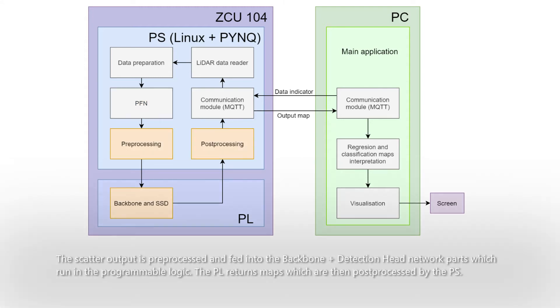The scatter output is preprocessed and fed into the backbone and detection head network parts, which run in the programmable logic.